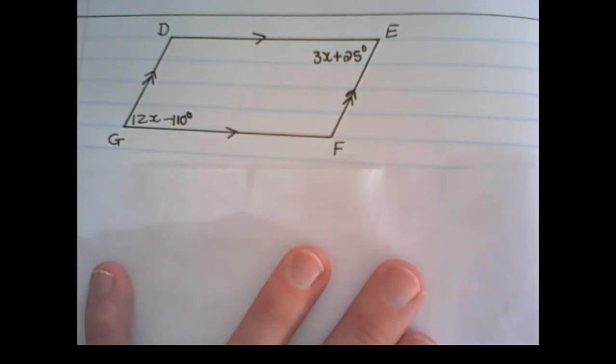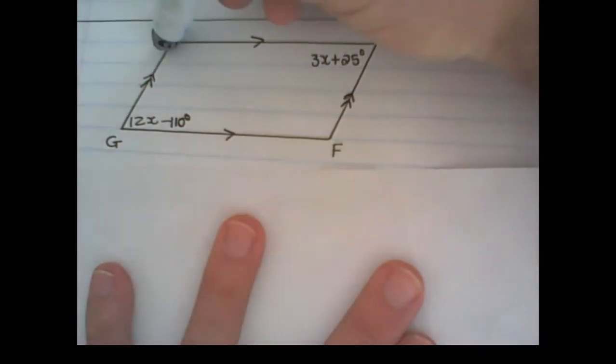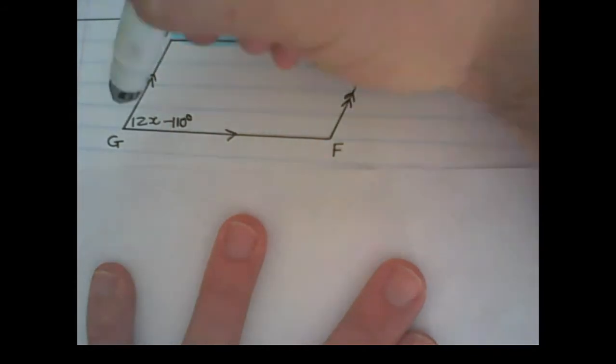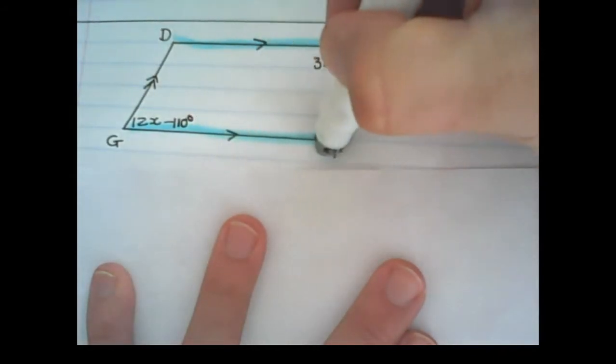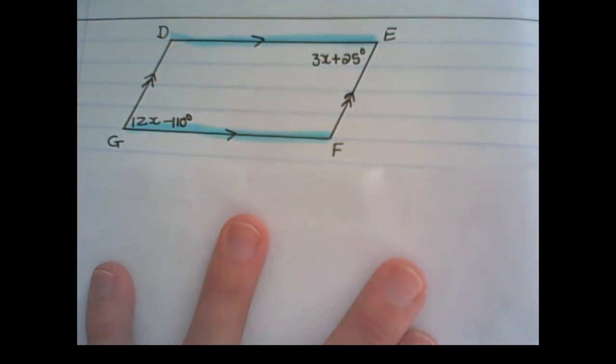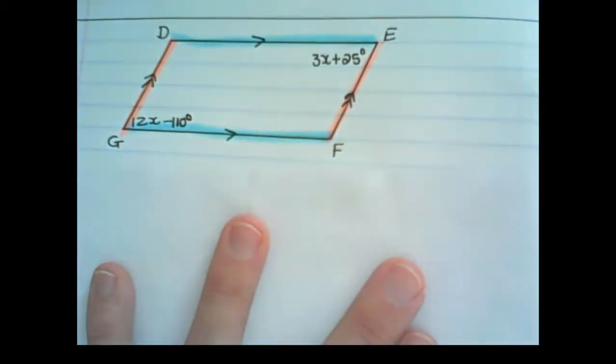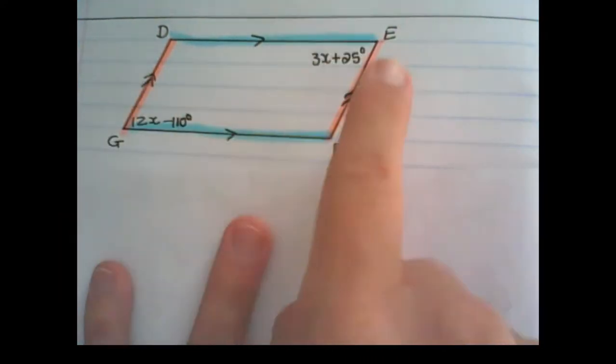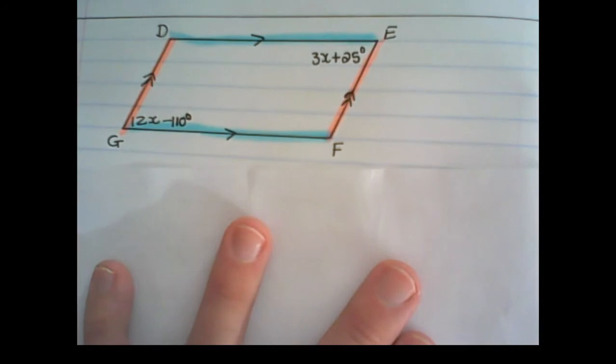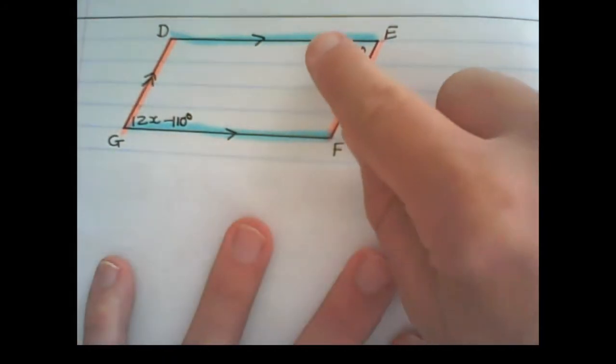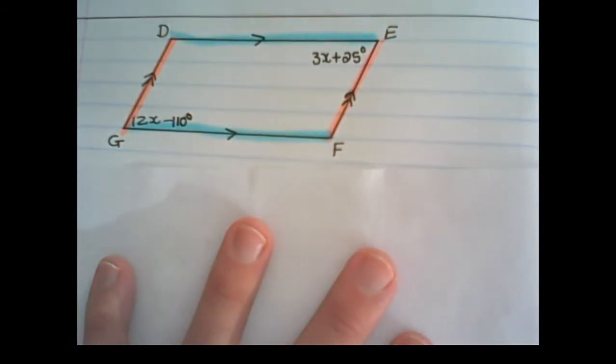Before we try and calculate the value of G, let us see what we have. We have the line DE parallel to the line GF, and we also have the line EF parallel to the line DG. This then satisfies the rules or the properties for a parallelogram. Remember if two pairs of lines opposite each other are parallel then that figure is called a parallelogram.